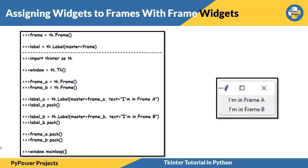Here is a very simple example. I have created a frame using TK.Frame with master equals to frame. I have imported tkinter, created a window with TK.TK, and then defined frame one and frame two. Label A has master equals to frame A — so there is a larger frame, frame A, and a smaller frame, frame B. We need to pack both frames.